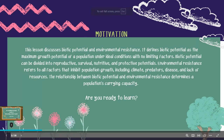This lesson discusses biotic potential and environmental resistance. It defines biotic potential as the maximum growth potential of a population under ideal conditions with no limiting factors. Biotic potential can be divided into reproductive, survival, nutritive, and protective potentials. Environmental resistance refers to all factors that inhibit population growth, including climate, predators, disease, and lack of resources. The relationship between biotic potential and environmental resistance determines a population's carrying capacity.